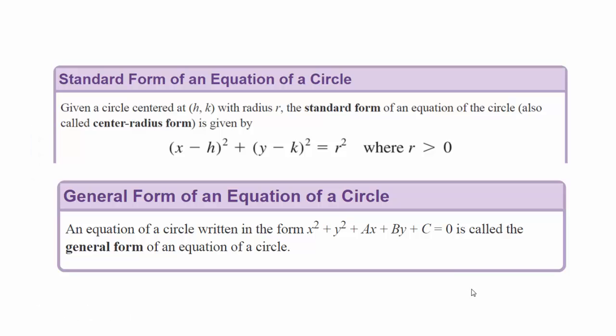Up to this point when we go back and forth between the graph and the equation of the circle, we're always looking at the standard form or the center-radius form. That's nice because we can pick out the center and the radius directly from the equation. Notice if you were to square out (x - h)² and (y - k)² and combine like terms, you'd get something that looks like this. This is called the general form of the equation of a circle. We're going to have to be able to go back and forth between these two forms.